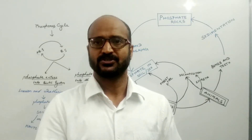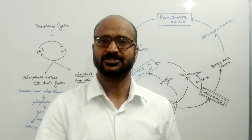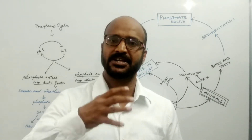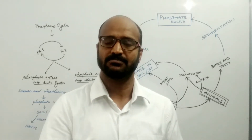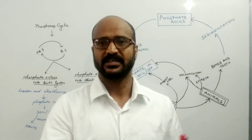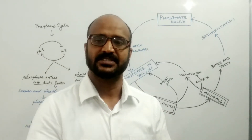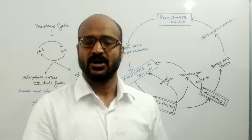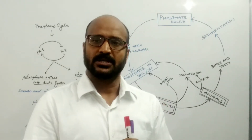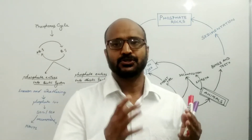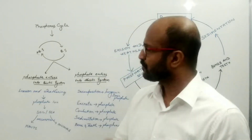Phosphorus is made available from the earth's crust in a sedimentation form, which is why this cycle is known as the sedimentary cycle. Now let's come to the meaning of the phosphorus cycle as a biogeochemical cycle.